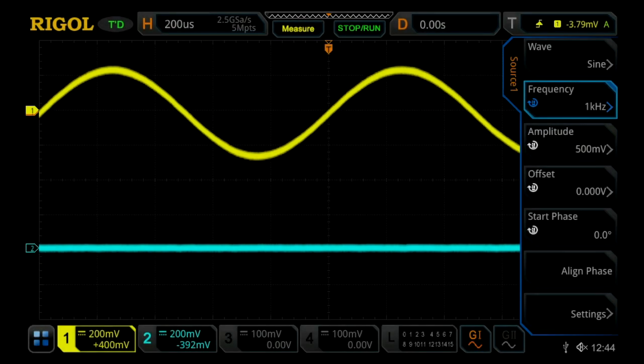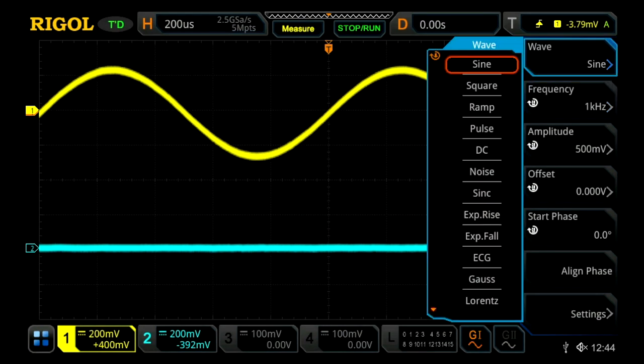These instruments come equipped with a two channel waveform generator built into the instrument which allows you to create your standard waveforms which include a sine wave, square wave, ramp, pulse, DC, and noise functions.